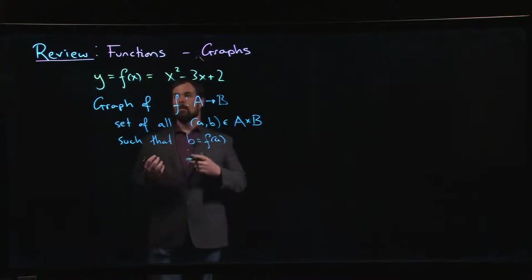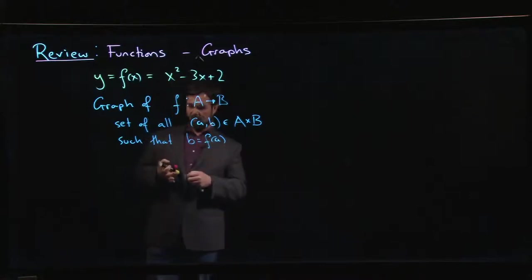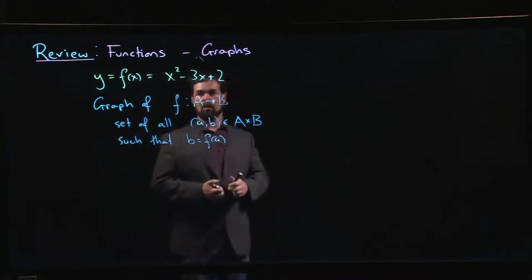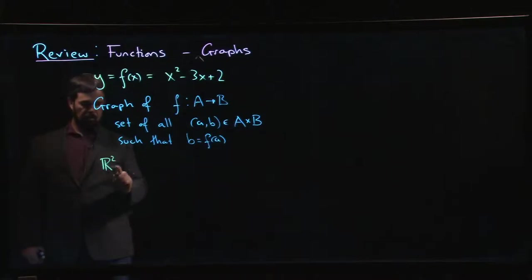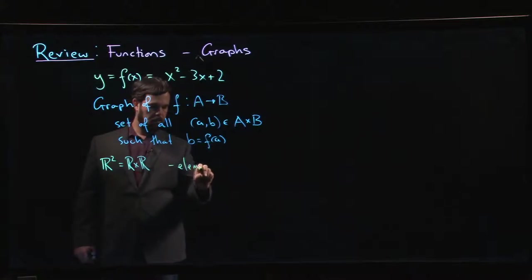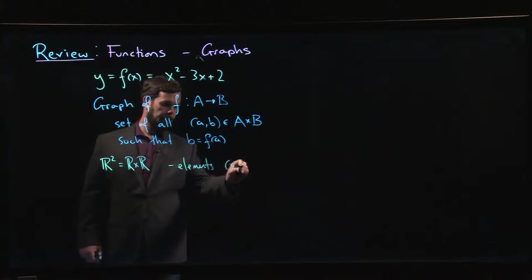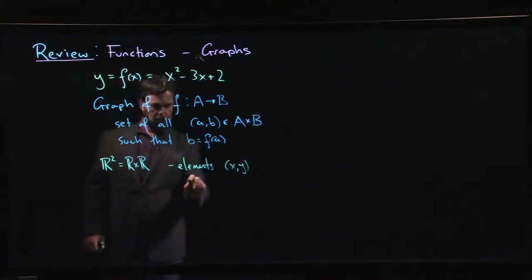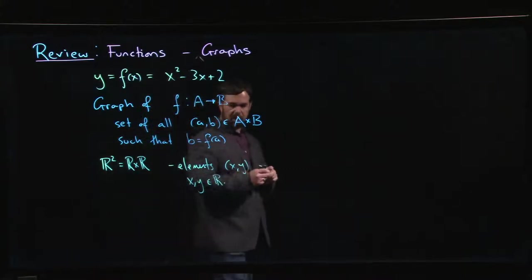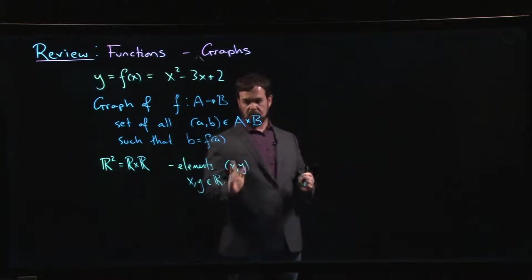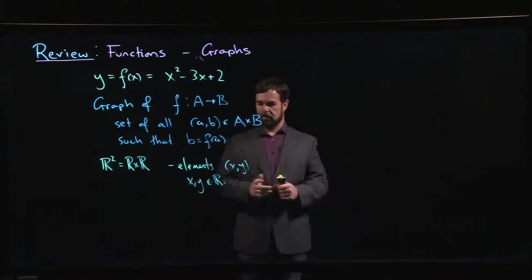This is where the idea of a graph comes in. The significance of x and y here is that these are the default variables when we're talking about things that live in what's often written as R². So R times R. Elements here are of the form (x, y) where x and y are real numbers. The important thing here is that this is an ordered pair, so there is this notion of first and last. y comma x is not the same thing as x comma y when you're talking about ordered pairs.